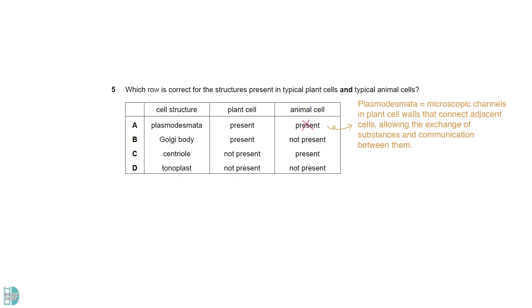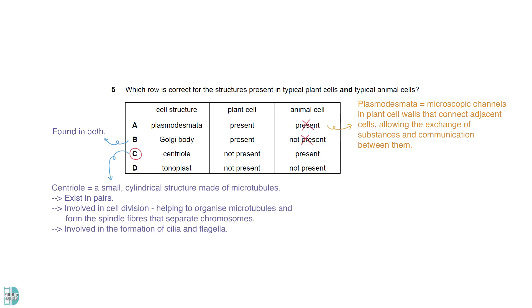A is wrong because plasmodesmata are only found in plant cells. Plasmodesmata are microscopic channels in plant cell walls that connect adjacent cells, allowing the exchange of substances and communication between them. The Golgi body is found in both cells. C is correct. The centriole is only found in animal cells.